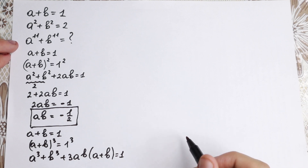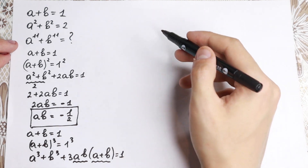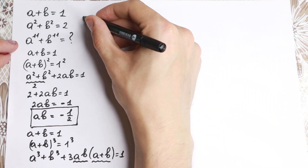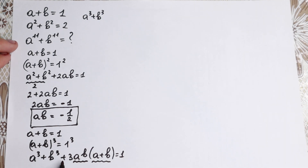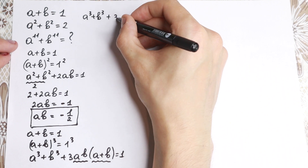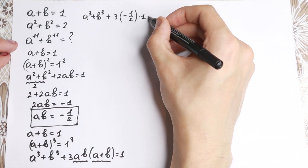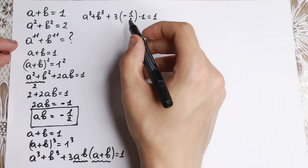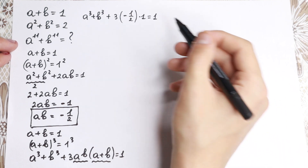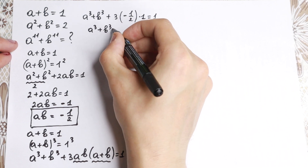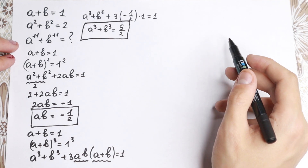Now, we know ab equals minus one half and a plus b equals 1. So we can write: a cubed plus b cubed plus 3 times (minus one half) times 1 equal to 1. Simplifying: 3 times minus one half gives minus three halves. Bringing it to the right-hand side gives five halves. So a cubed plus b cubed equals five halves.